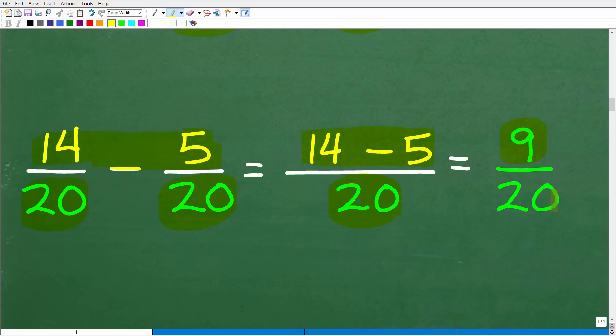14 minus 5 is 9 over 20. And here we're looking to see if we can reduce, but there are no common factors. So there is your final answer: 9 over 20.